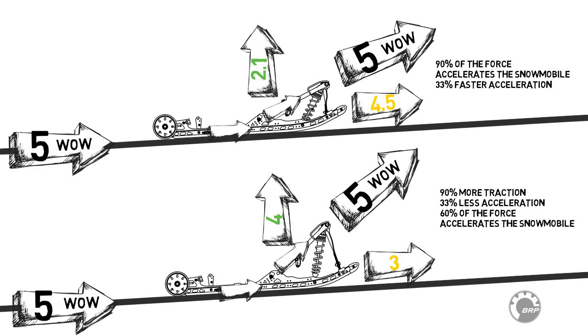On an icy surface, however, the flatter suspension angle may not push the track into the ice with enough force and the track may spin instead of accelerating the snowmobile.